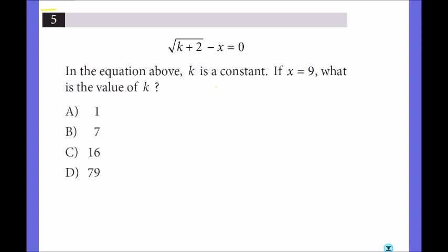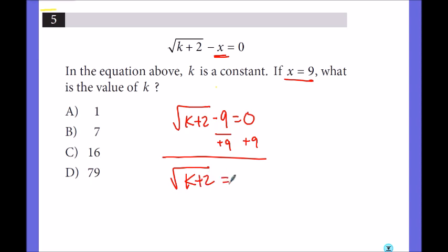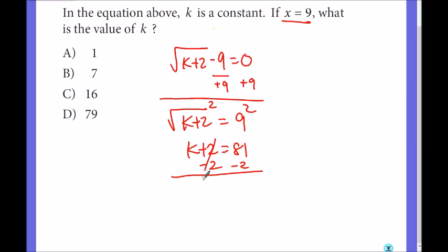In the equation above, k is a constant. If x is 9, what is the value of k? So square root of k plus 2 minus x equals 0 because x is 9. If you move 9 to the other side by adding, you get square root of k plus 2 equals 9. So let's square both sides to get rid of the square root. So k plus 2 equals 81. Move 2 by subtracting from both sides. So I get k equals 79. So it is D.